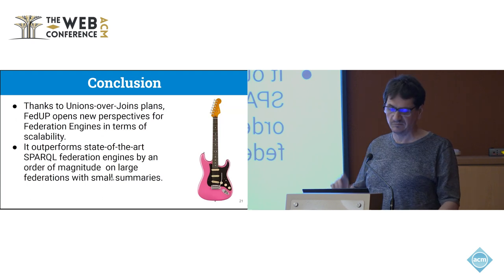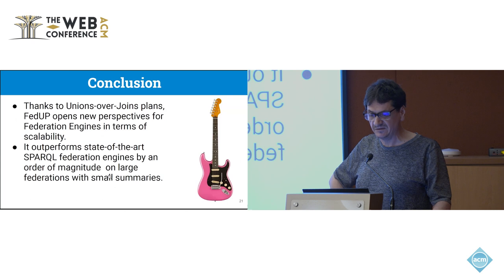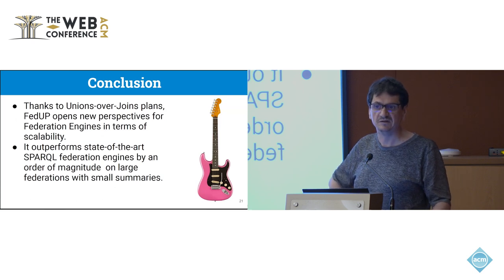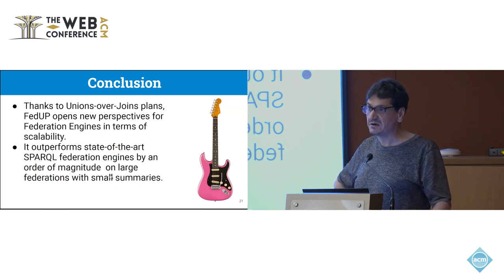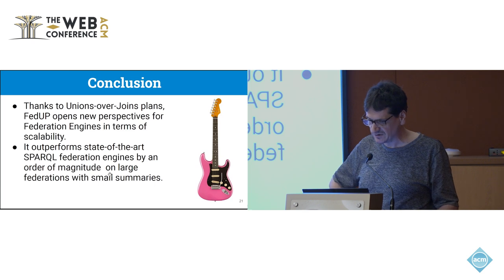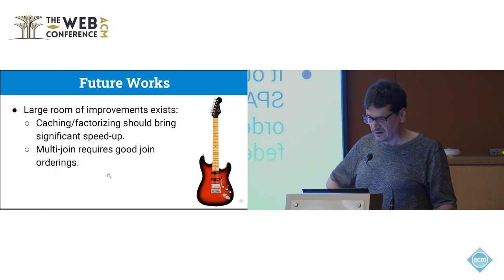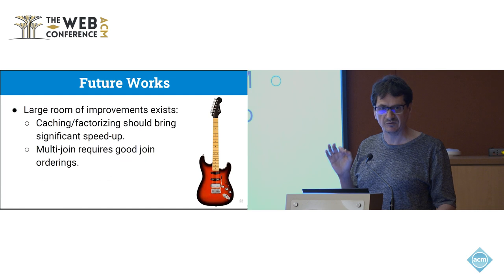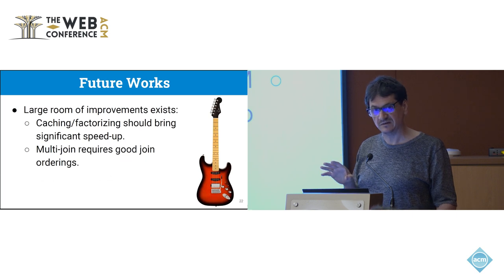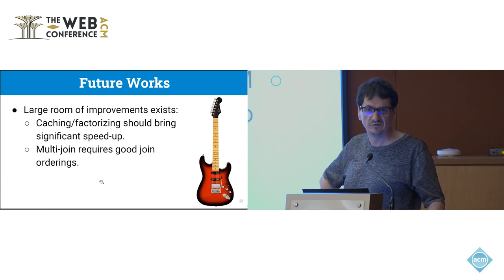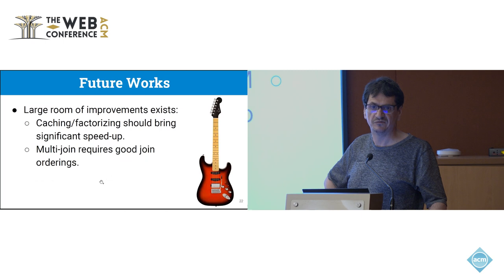In conclusion, we can say that because we use union-over-join plans, we open a new perspective, new search space for federation engines in terms of scalability. Now it's possible to think about maybe thousands of knowledge graphs and query all the thousand knowledge graphs with just one query. For future work, I think there is a large room of improvements because we just produce logical plans. We made absolutely no optimizations: no caching, no factorization, no join ordering, nothing. This is just brute force execution of logical plans. I think it should be possible to divide the execution time by maybe two or three, maybe ten.